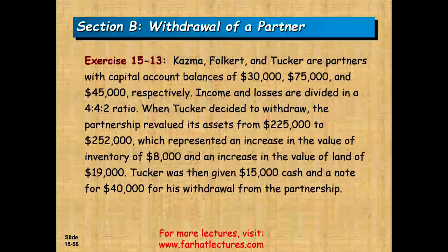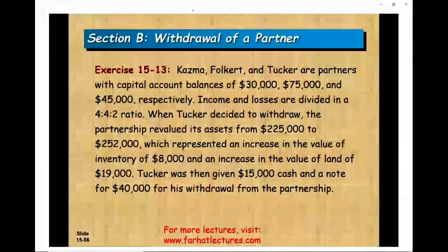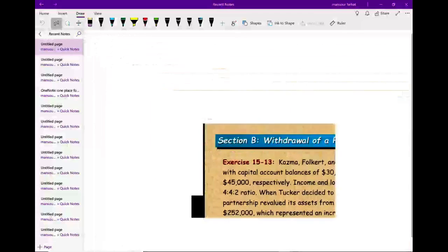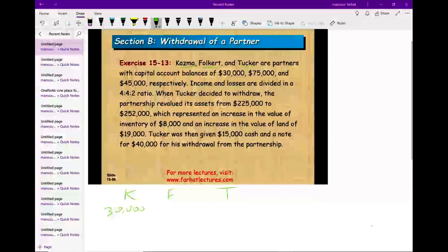The best way to illustrate this is to work an example. We have three partners: K, F, and T. I like to keep track of their balances. K has a capital account of $30,000, F has $75,000, and T has $45,000.